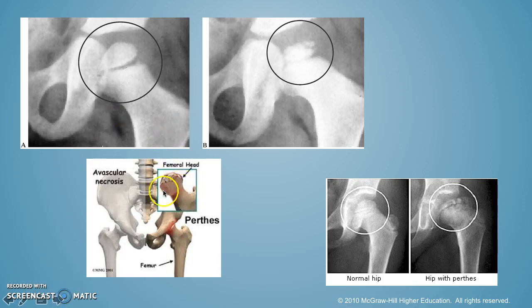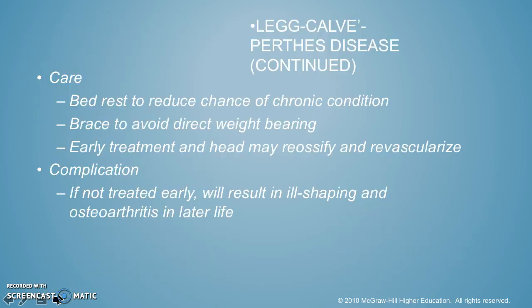Looking at the images, you can see that there just wasn't enough blood flow here, so it kind of broke off a little bit, and the bone just doesn't look right because it wasn't getting everything that it needed. What do you do? You can put them on bed rest to reduce the chance that it would become chronic. You've got to give them a brace to avoid direct weight bearing. If you can get it early, you may be able to re-ossify and re-vascularize it. If not treated, it can lead to osteoarthritis later in life.